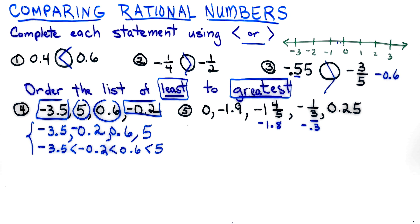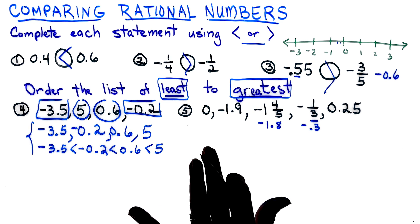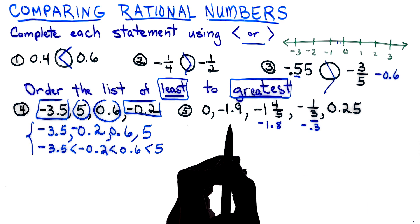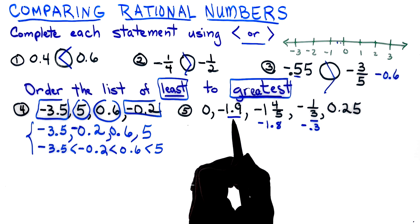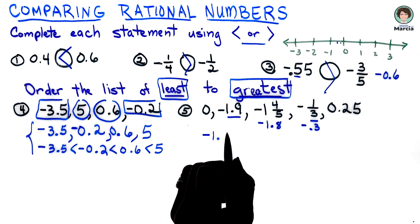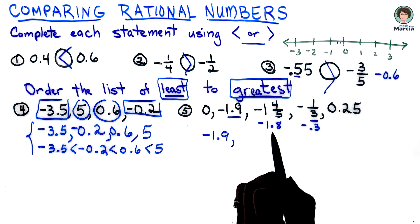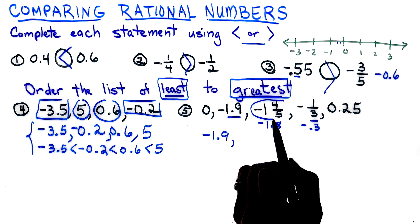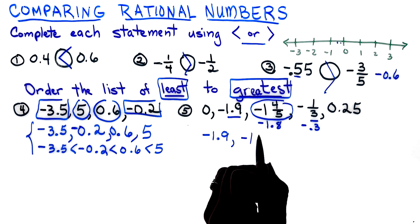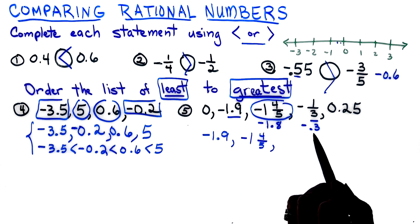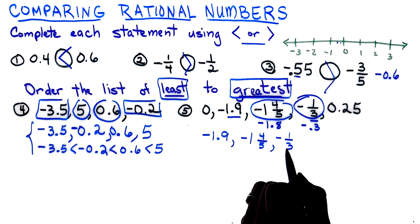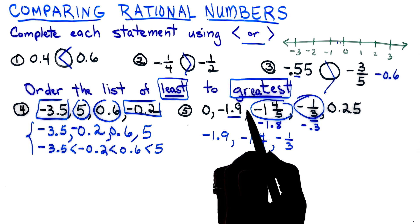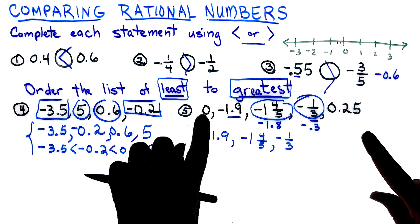Looking again, we have one, two, three, four, five numbers that we want to make sure that we catch all of them. Sometimes I'll just put a little check mark above it to make sure that I have all of my numbers listed from least to greatest. We're going to start with the negatives and we do have negative one and nine tenths, one and eight tenths, and then three tenths. Going further away from zero, we're starting with the negative one and nine tenths. The next number I see is actually one and eight tenths, but remember we always want to write what they give us, the original, so it's a negative one and four-fifths. Then I see that I have negative three tenths, and I'm going to write it again as the original, a negative one-third.